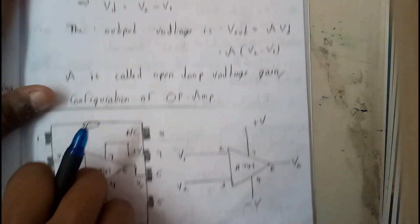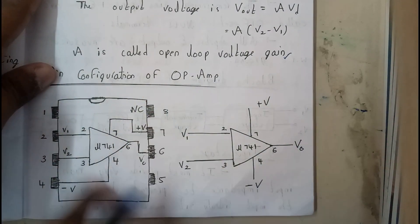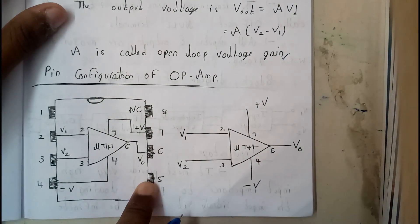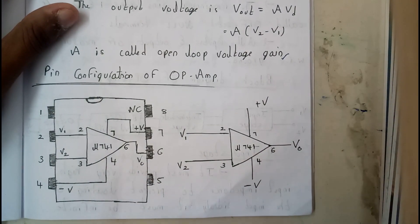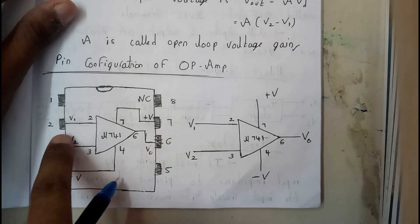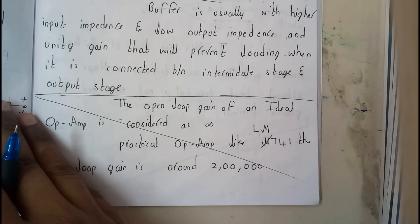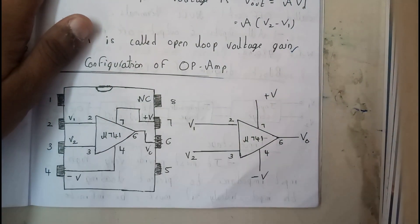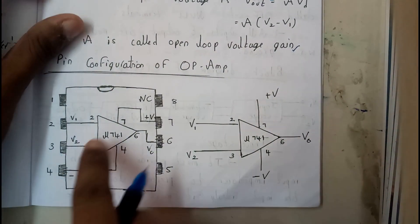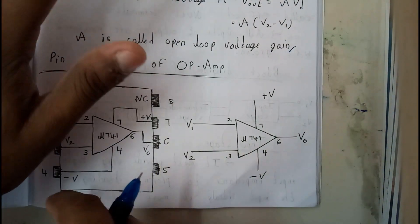So basically operational amplifier is created by using eight pin configuration. It's originally made with eight pins. One and five can be used in some other cases, but in our normal case, practical operational amplifier has totally five pins. Out of eight pins, we will be using only five pins.